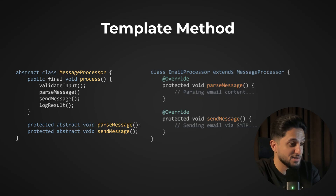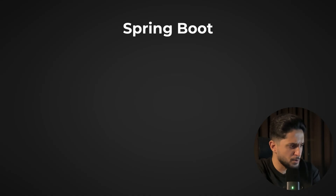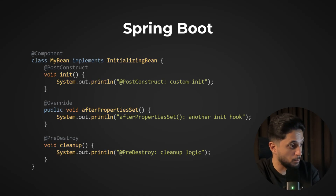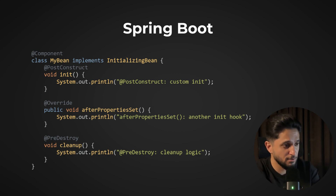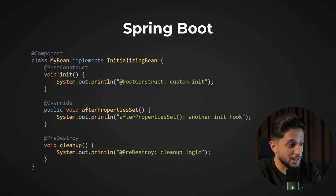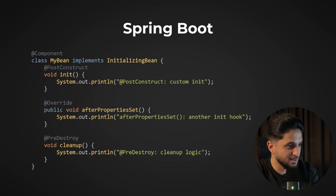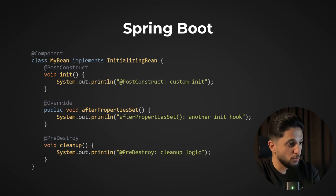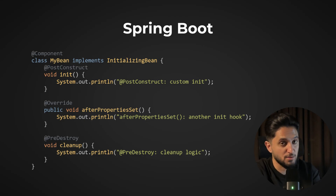In Spring Boot, the bean lifecycle follows the template method pattern. Spring defines the complete lifecycle algorithm — instantiation, dependency injection, initialization, and destruction — but provides hooks like @PostConstruct, InitializingBean.afterPropertiesSet, and @PreDestroy where you can customize specific steps. Spring controls the overall process but you define what happens at specific points. Under the hood, Spring's BeanFactory executes the template method that orchestrates the entire bean lifecycle.